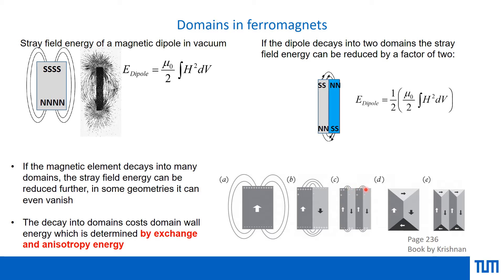If you split into more and more domains, the energy will be more and more minimized. There is a Landau-type schematic in which the dipole energy is really minimized and the stray fields are zero. This situation is when the system is in its lowest energy state.